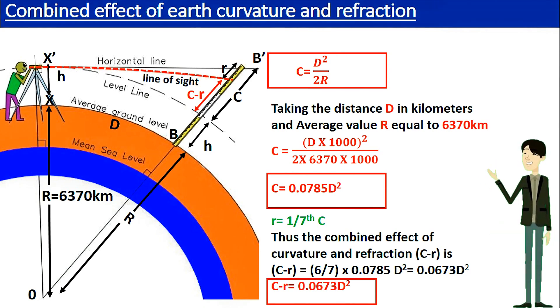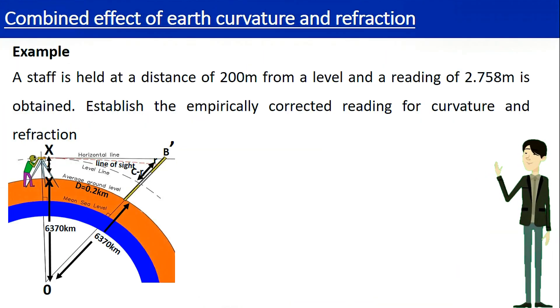To understand this more better let's try this example. A staff is held at a distance of 200 meters from a level and a reading of 2.758 meters is obtained. Establish the empirically correct reading for curvature and refraction. The reading you observe through the line of sight is 2.758 meters. If you deduct C minus R value from staff reading you will get the correct staff reading.